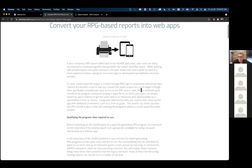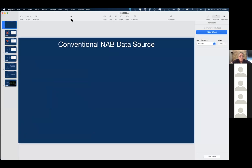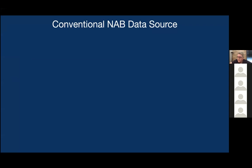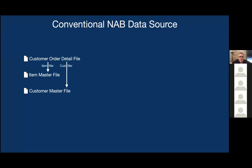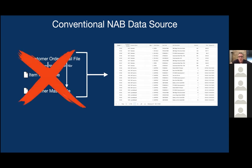What we're going to talk about today is the topic of a pre-execution program and a data source. A conventional data source in App Builder typically has a file like your customer order detail file joined with your item master and customer master using the item number and customer number. That's a conventional data source, whether it's wizard-based or SQL-based, and it conventionally feeds a grid widget or any other widget. But there are always cases where some people have some really complex databases or logic that makes it really difficult to pull through a conventional data source.